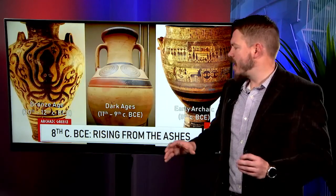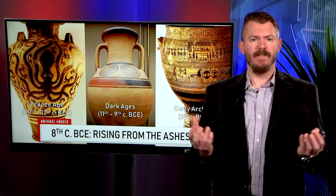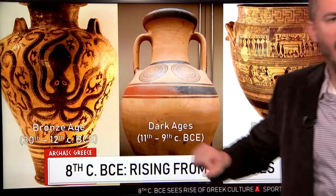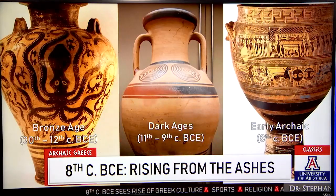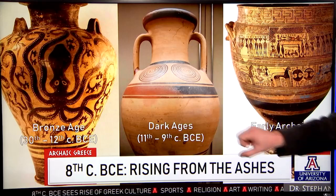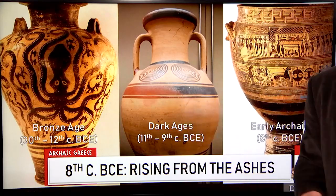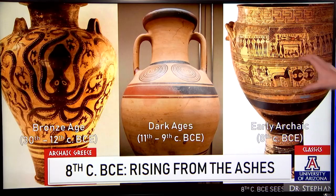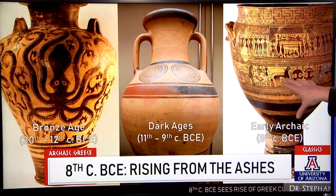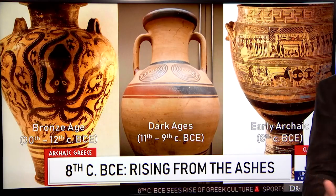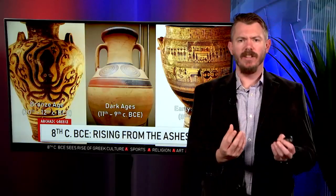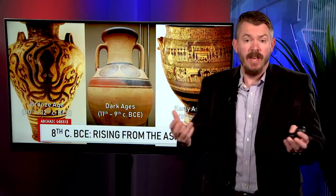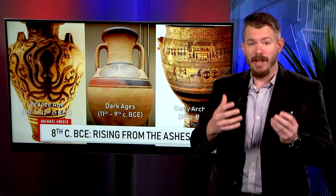In the 8th century, we see culture rising from the ashes. We had this kind of beautiful iconographic pottery in the Bronze Age, then moved to very basic geometric pottery during the Dark Ages. Now iconography is back — depictions of funerals, people, animals, chariots, and soldiers decorating the pottery. While it still looks very geometric, we see the start of what's moving towards that classical Athenian pottery that we all recognize.